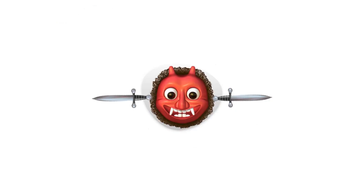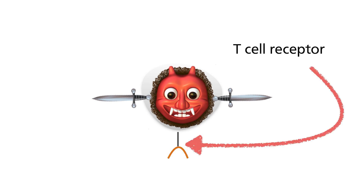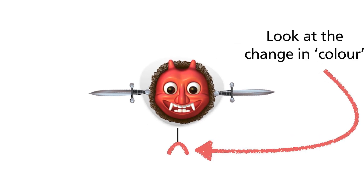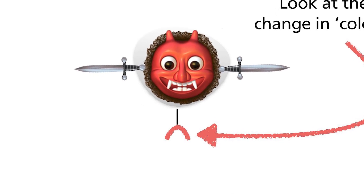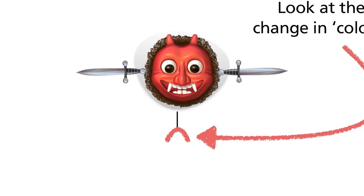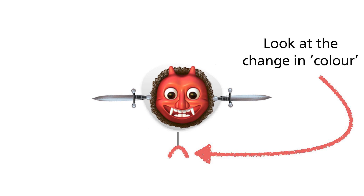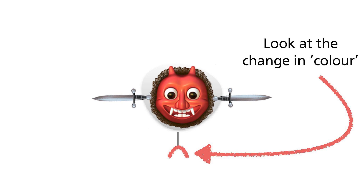The key to cytotoxic T-cells recognizing microbially infected cells is the presence of a T-cell receptor. Scientists were thinking: what if they can change these TCRs to recognize specific targets like those found on cancer cells? The result is something called the chimeric antigen receptor — CAR on T-cells, or CAR-T.